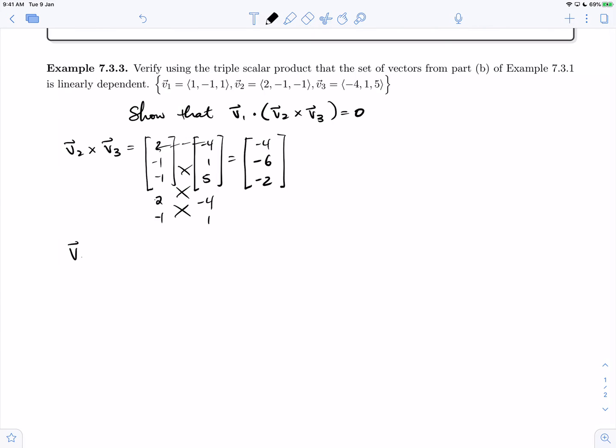v1 dotted with this result. So our vector v1, 1, minus 1, 1, dotted with minus 4, minus 6, minus 2 is minus 4 plus 6 minus 2, which gives 0. So the three vectors are coplanar.